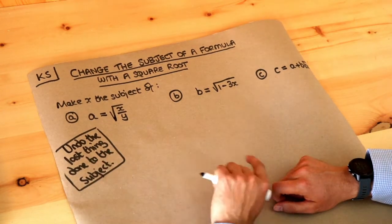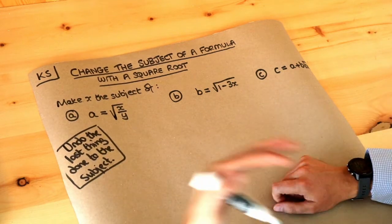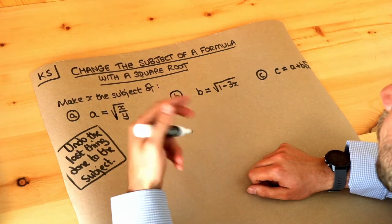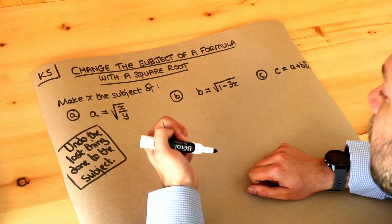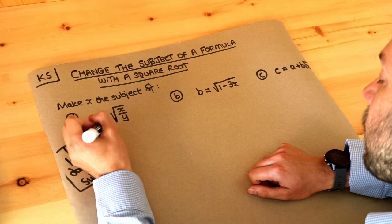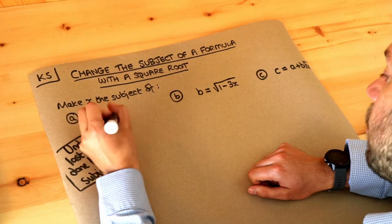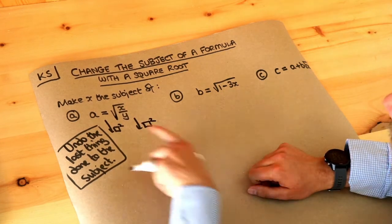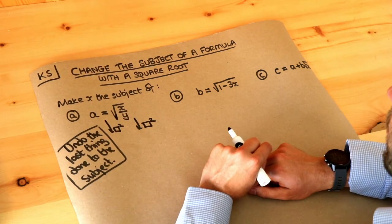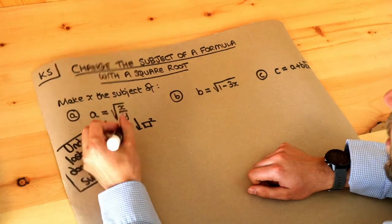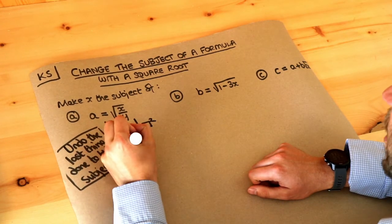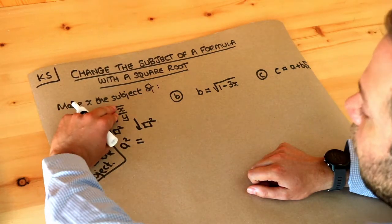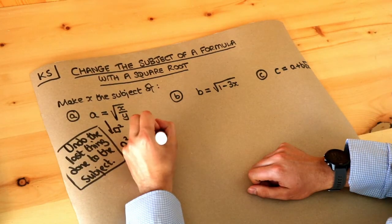We undo the last thing done first, so we want to undo that square root. We do that by doing the opposite to each side of the equation. The opposite of square root is squaring, so we square both sides. Whatever we do to the left hand side we have to do the same to the right. Squaring the right hand side gets rid of that square root, leaving x over y.